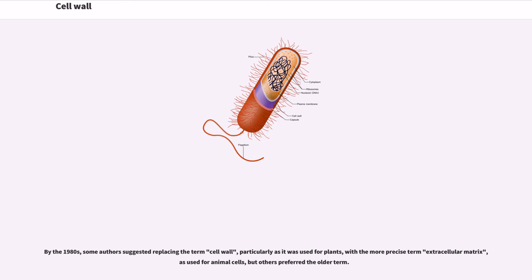By the 1980s, some authors suggested replacing the term cell wall, particularly as it was used for plants, with the more precise term extracellular matrix, as used for animal cells, but others preferred the older term.